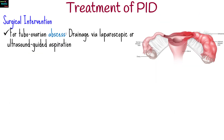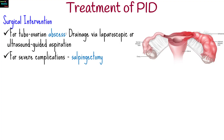For tubo-ovarian abscess, drainage via laparoscopic or ultrasound-guided aspiration is performed. For severe complications, salpingectomy may be required.